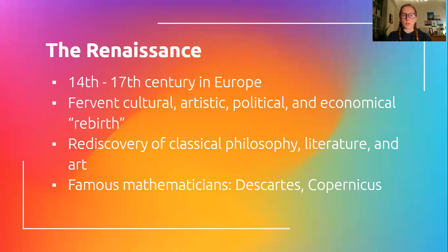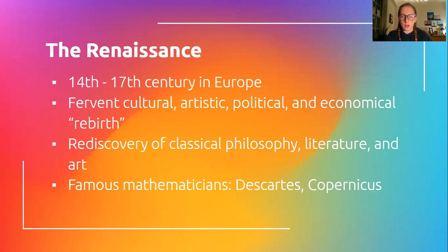First, a little bit about the renaissance in general. This happened between the 14th and 17th century in Europe, and there was a reawakening. People were creating and discovering very quickly, and it was a time period defined by a combination of rediscovering classical literature and philosophy, as well as a rebirth of culture, art, and politics — kind of an overhaul of the entire Europe. The renaissance also produced a number of famous people including artists, scientists, philosophers, and obviously mathematicians.